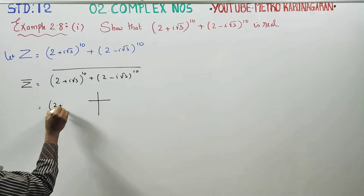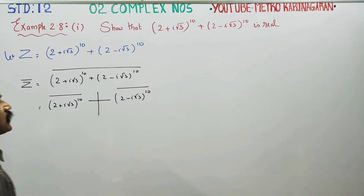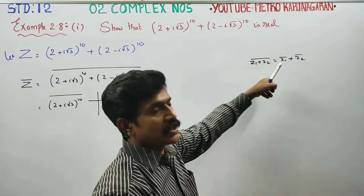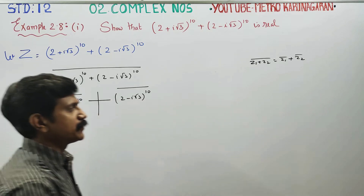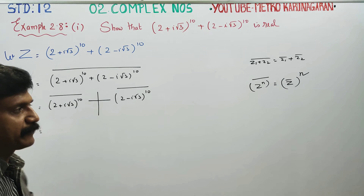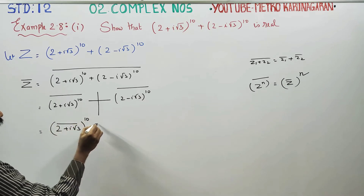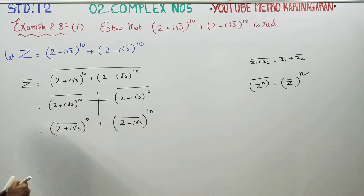So the conjugate of z equals the conjugate of (2 + i√3)^10 plus the conjugate of (2 - i√3)^10. This gives us (2 - i√3)^10 plus (2 + i√3)^10.